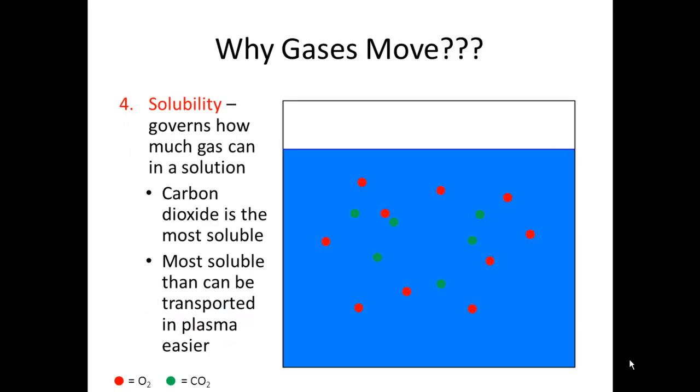All right, let's move on. Number four, solubility. Solubility governs how much gas can be in a solution. Here's some facts. Carbon dioxide is the most soluble. It's the most soluble, and therefore, it can be transported in plasma much easier. That's actually a topic when I discuss gas transportation that we'll come back to. But right now, what does it mean, solubility?